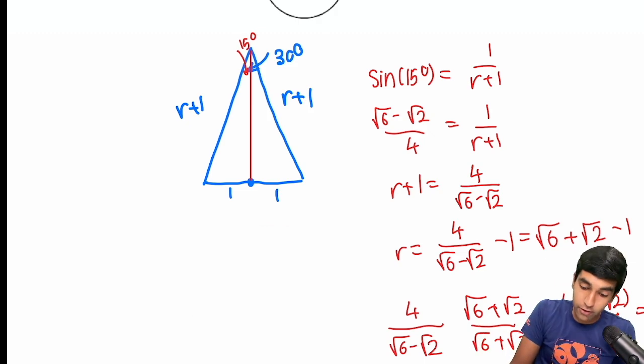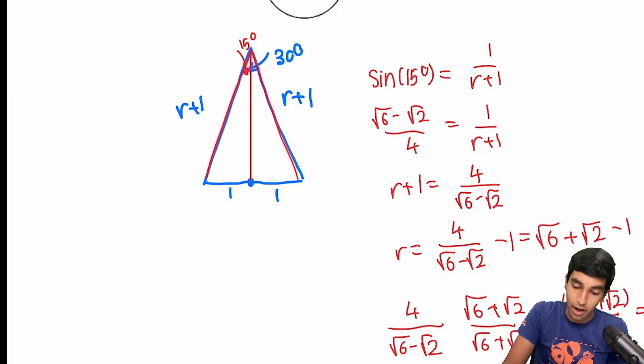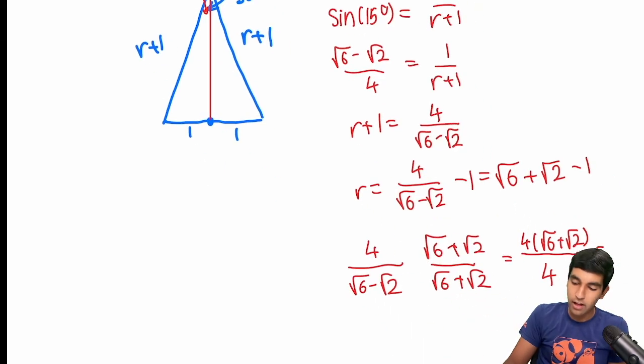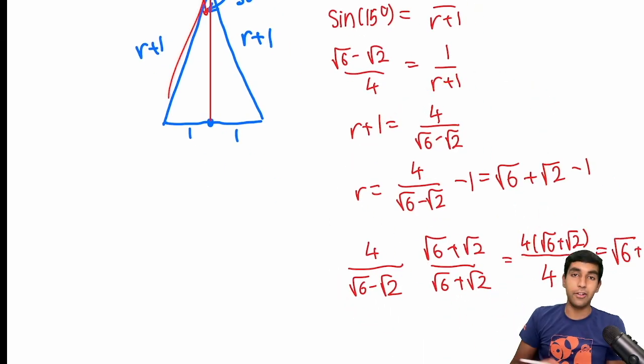The other way is you could use law of cosines with r plus 1, r plus 1, and 30 degrees, which is 2, and you get a pretty neat system of equations. Very similar here. You solve for r very similarly.